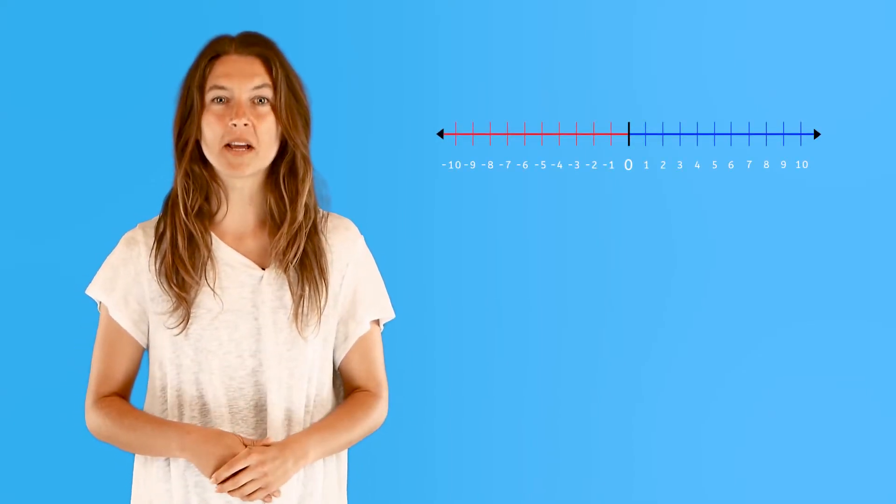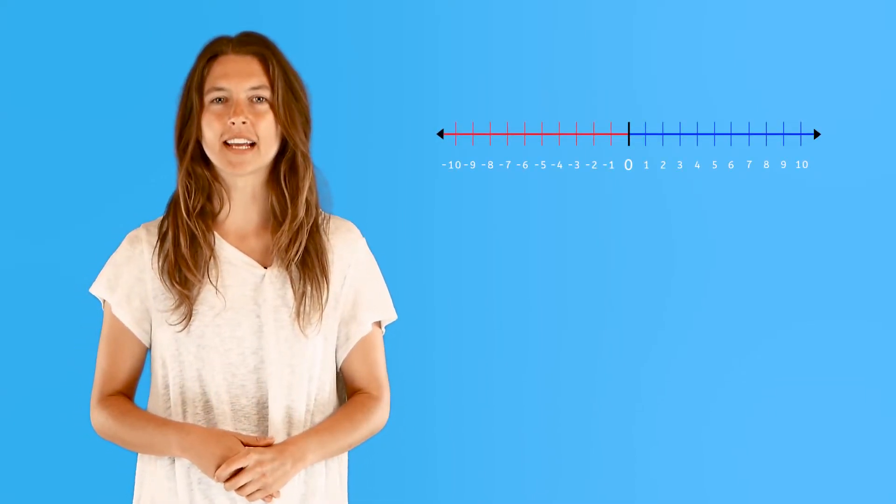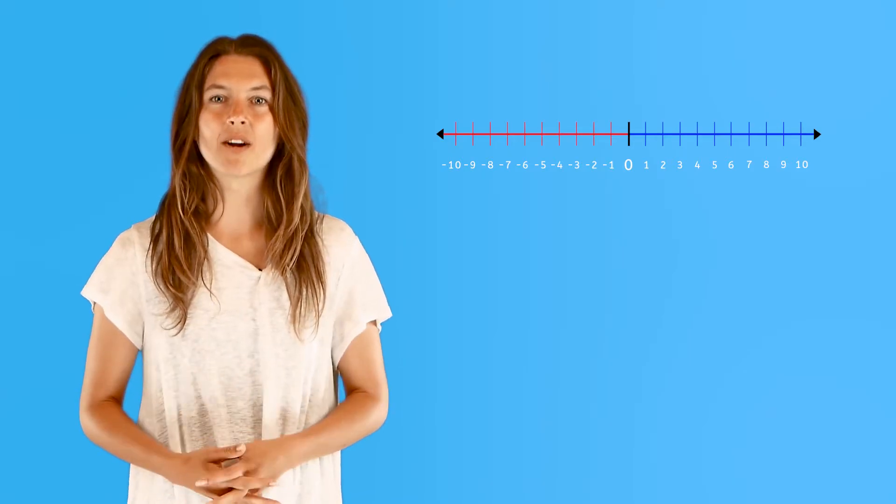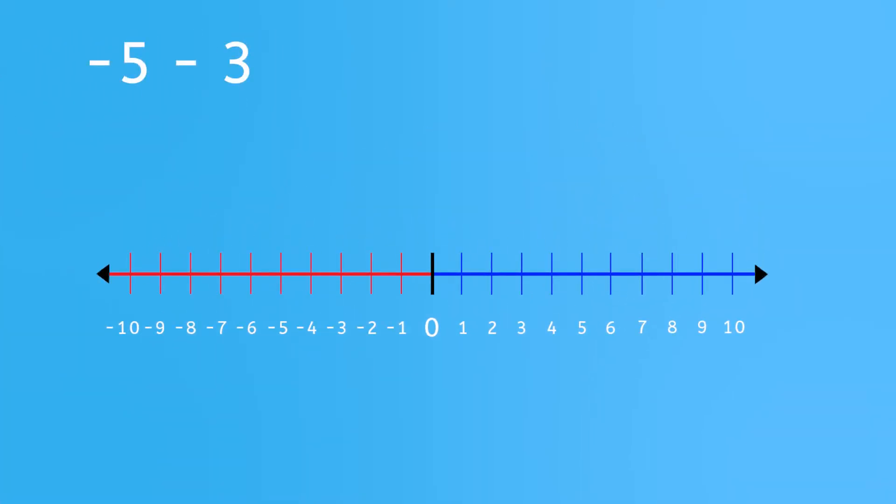Let's subtract some positive integers from negative integers. Just like in our other videos, we can use the number line to subtract positive from negative integers. Let's start with this one: negative 5 minus 3.